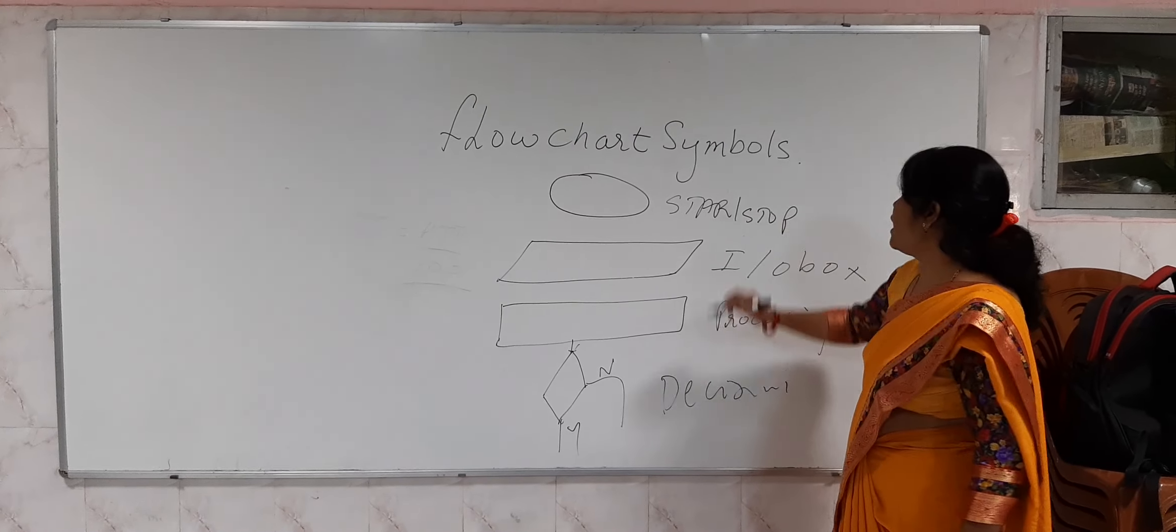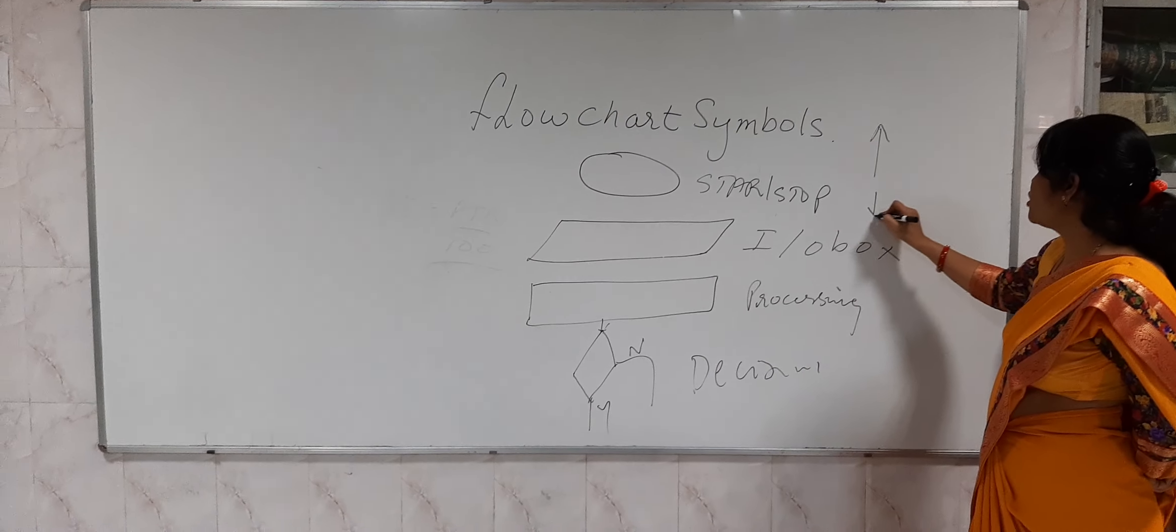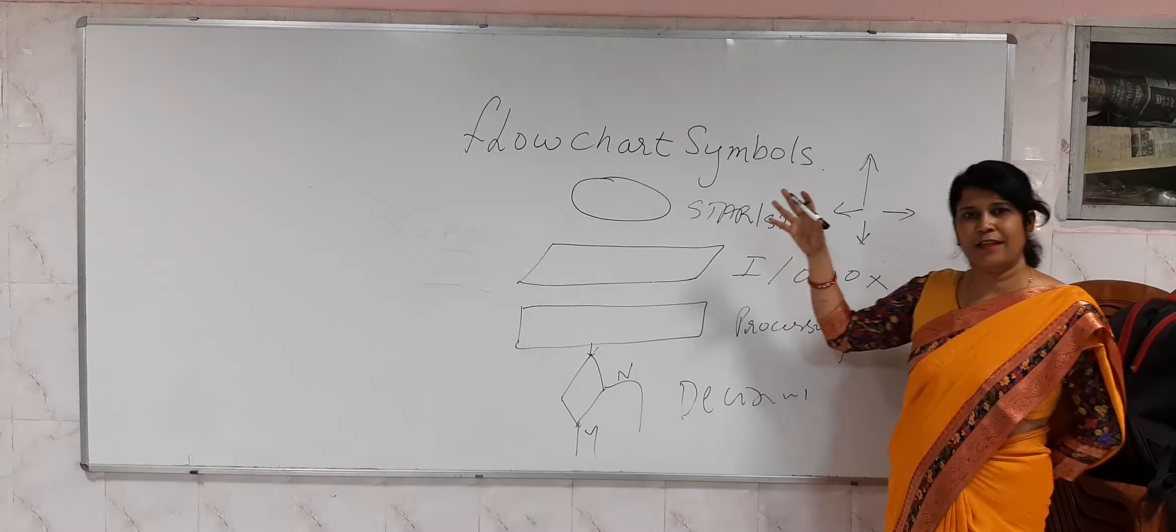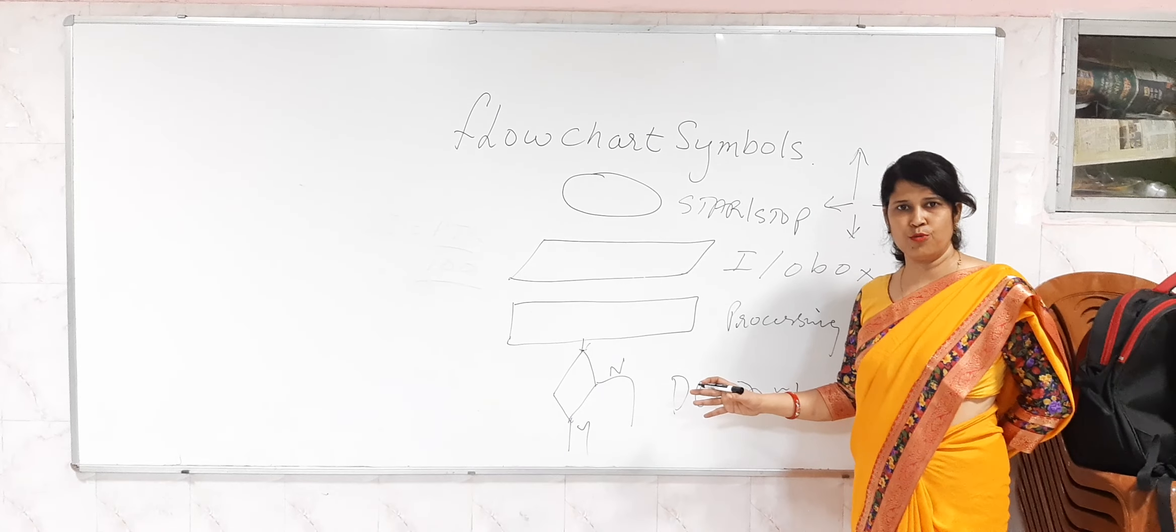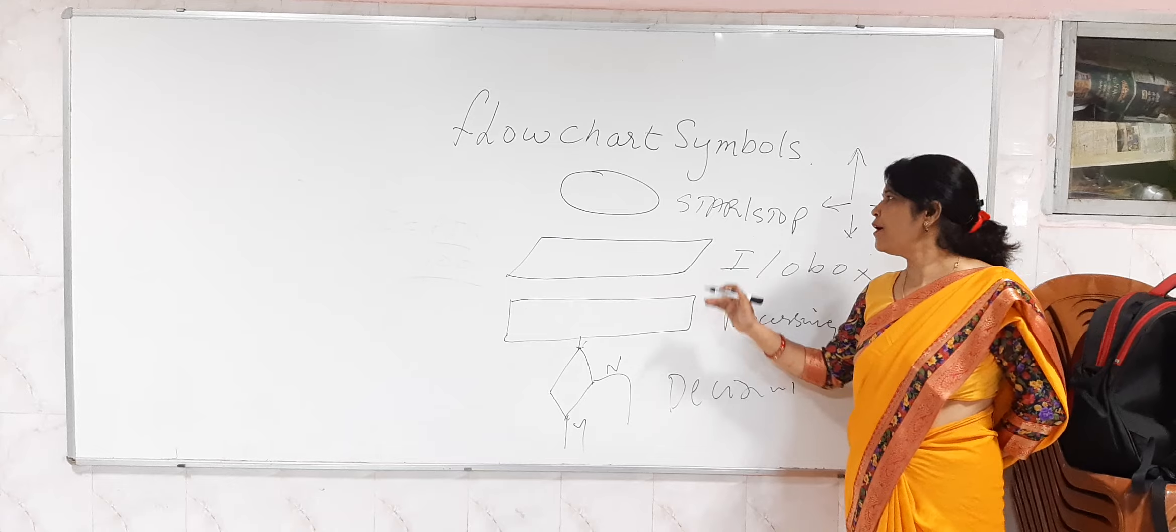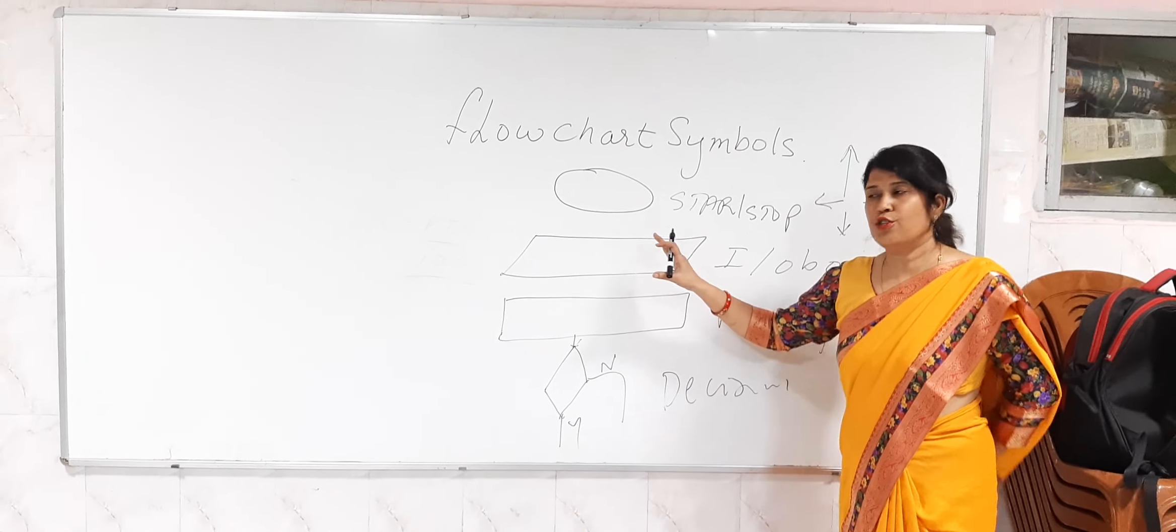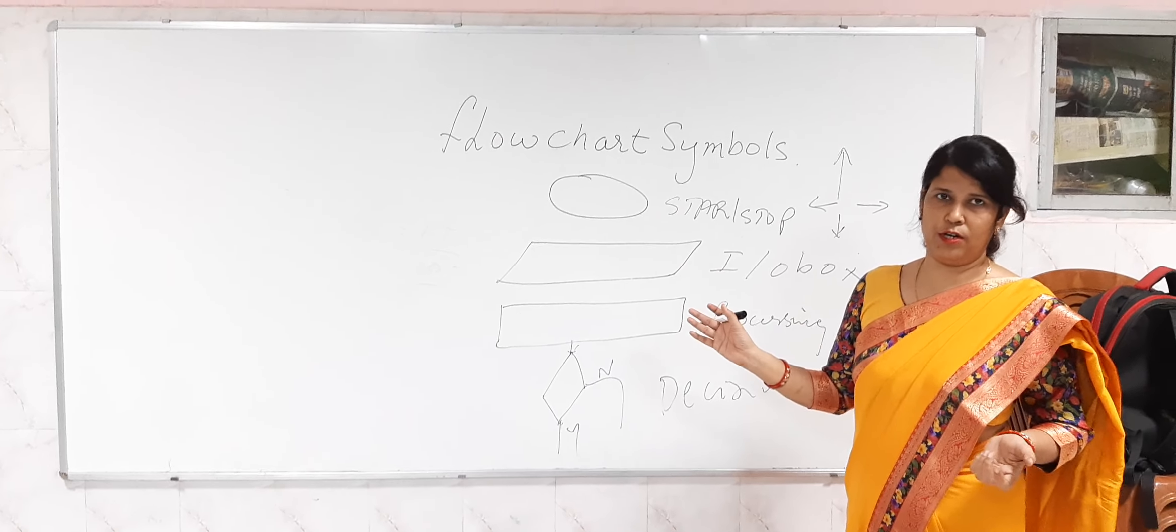After this we have flow lines—top, bottom, left, right. These flow lines show the flow of data, from top to bottom or from left to right. We connect all the symbols with these flow lines. These are the different symbols of flowchart.